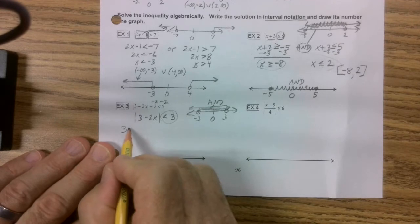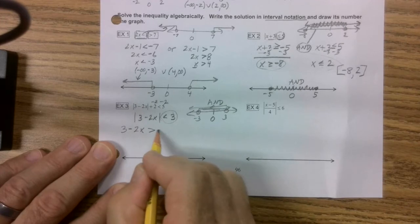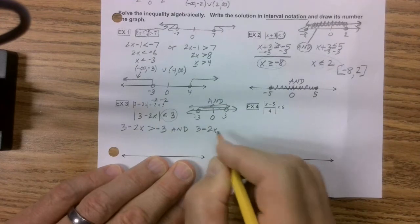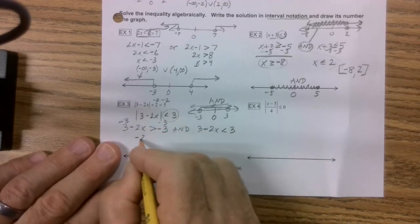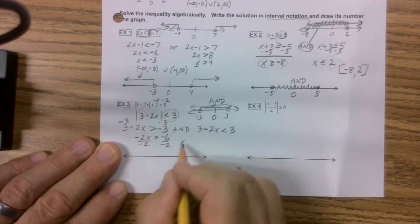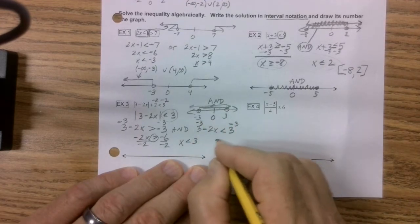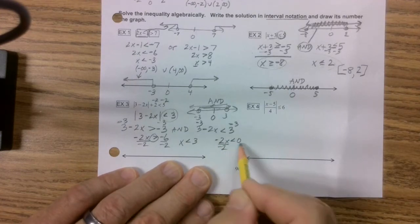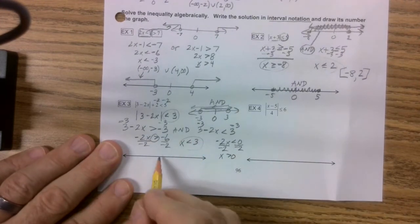So we go 3 minus 2x, according to the picture, is greater than negative 3, and 3 minus 2x is less than 3. So we subtract 3 from here, subtract 3 from here, we get negative 2x is greater than negative 6. If you recall, if you divide an inequality by a negative, what do you got to remember to do? Flip the inequality. Now we're going to subtract 3, subtract 3, so we get negative 2x is less than 0. Just because this is a 0, don't mess up your rules. You're still dividing by a negative, so you have to flip the inequality.